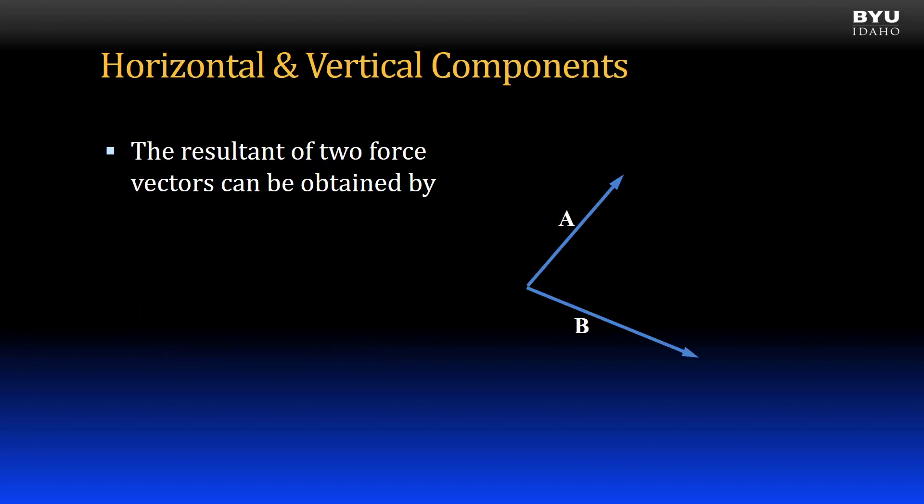First, vector horizontal and vertical components. Let's say we have two force vectors, A and B, and we want to add them together to get a resultant vector.